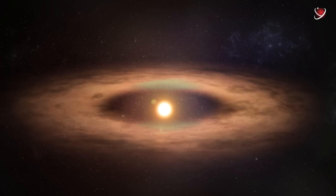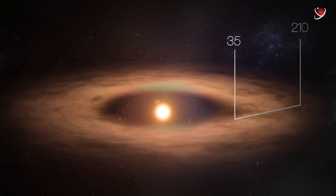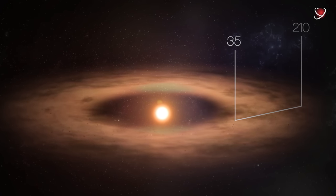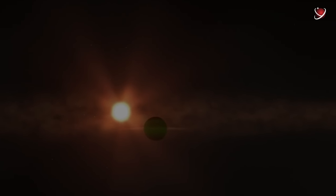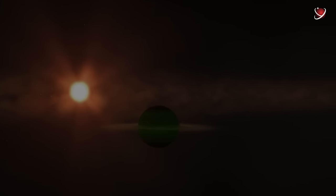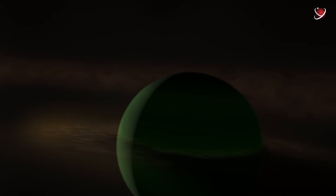At AU Mic, the disk extends from 35 to 210 astronomical units from the star. It is characterized by asymmetry with gaps and clots. This is a hypothesis that new planets can be born there. It is difficult to observe and examine the disk because the star shows strong flare activity, which makes it difficult to find exoplanets by transit photometry.